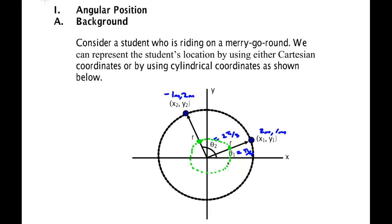With a solid wheel that is filled in, you're going to have many particles. Some particles go around in one circle, others go around in a different, larger circle. But if the object is rigid, all the particles undergo the same angle change in the same amount of time. So it makes sense to talk about the angle as the way to measure the position of a rotating object — that is, angular position.